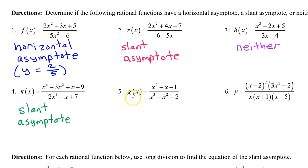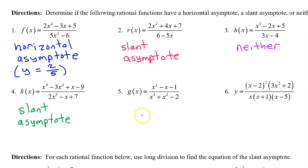Number five: the numerator has degree two, the denominator has degree three. Since the denominator has the greater degree, there is a horizontal asymptote, and it is y equals zero.